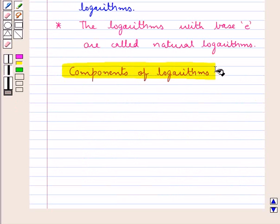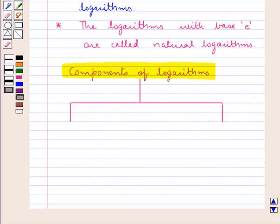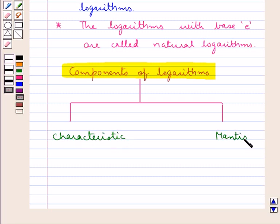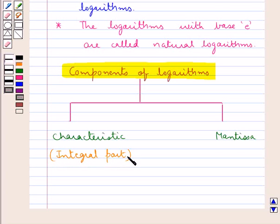We discuss the components of logarithms. We have two components of logarithms: the characteristic of the logarithm and the mantissa of the logarithm. The integral part of a logarithm is the characteristic, and the decimal part of the logarithm is called the mantissa.